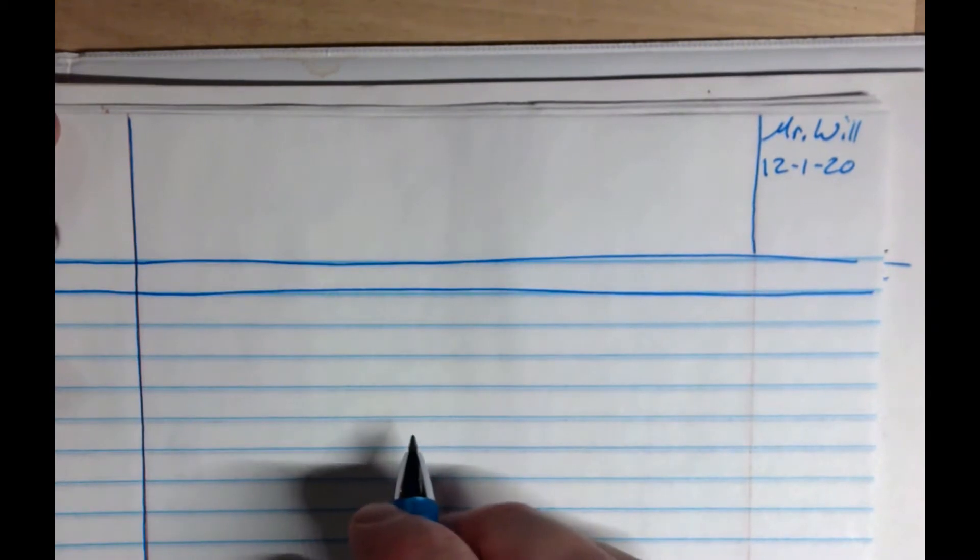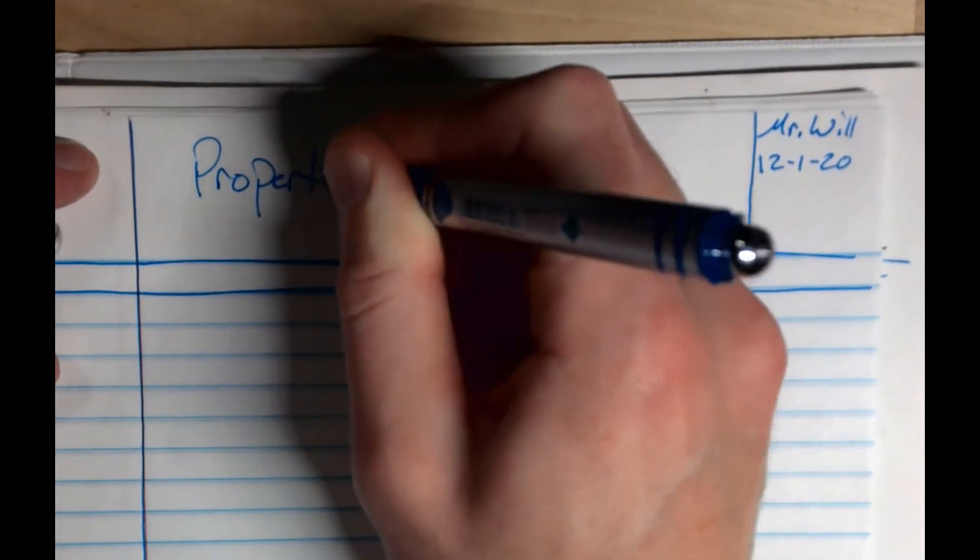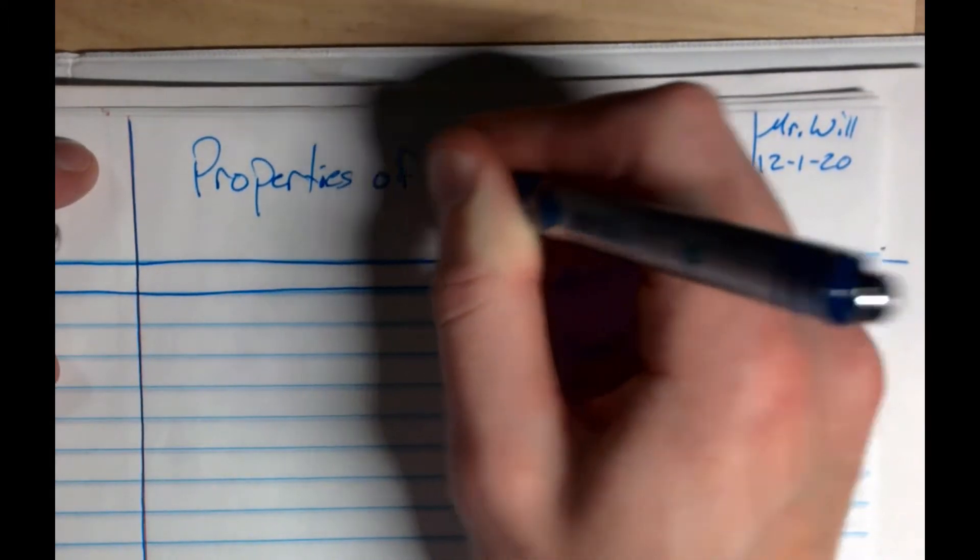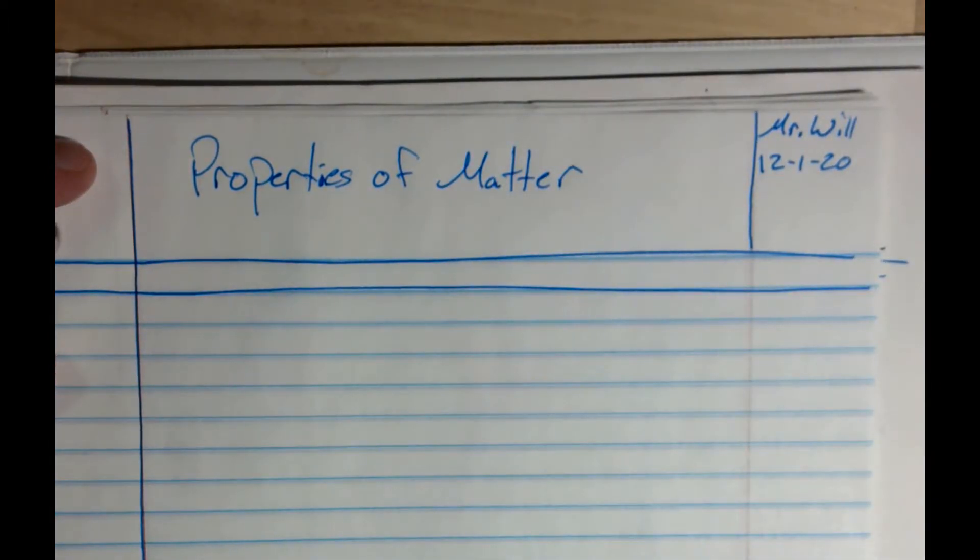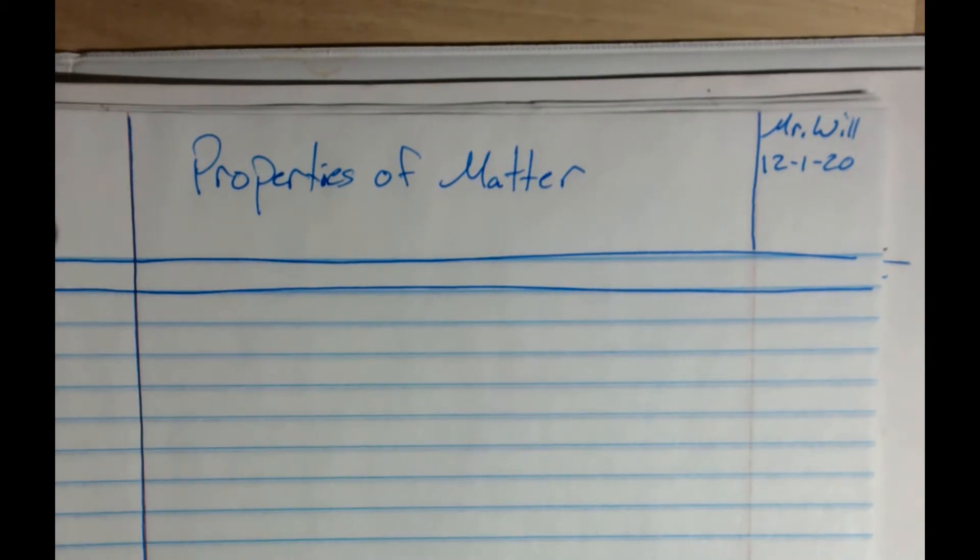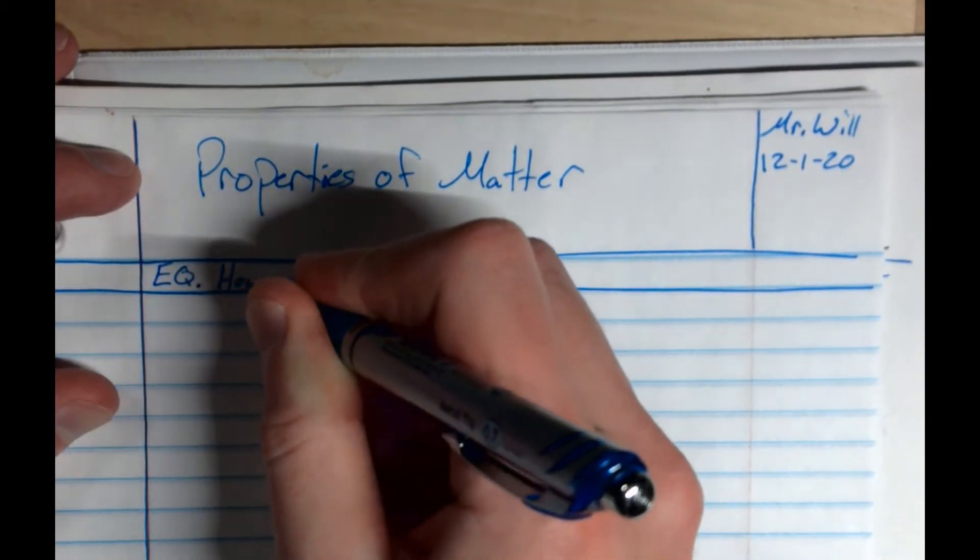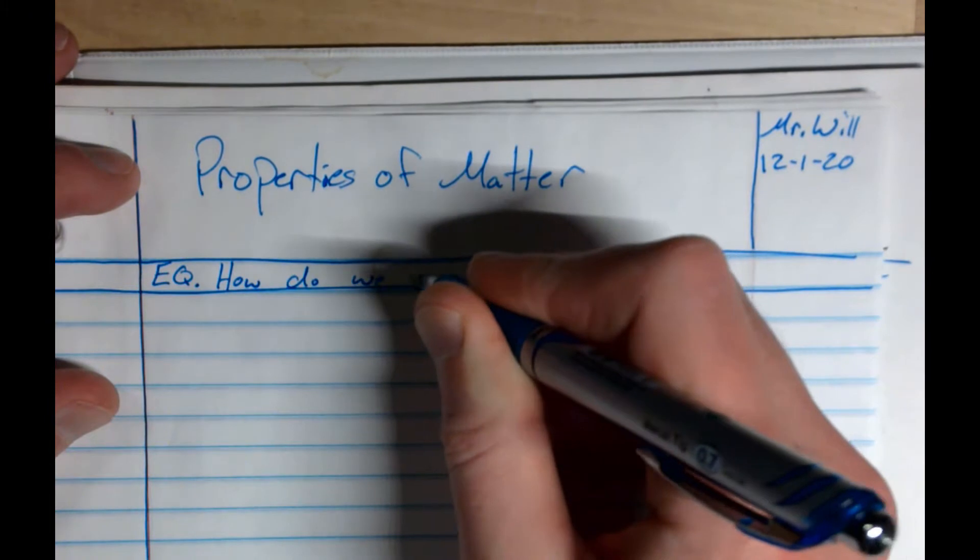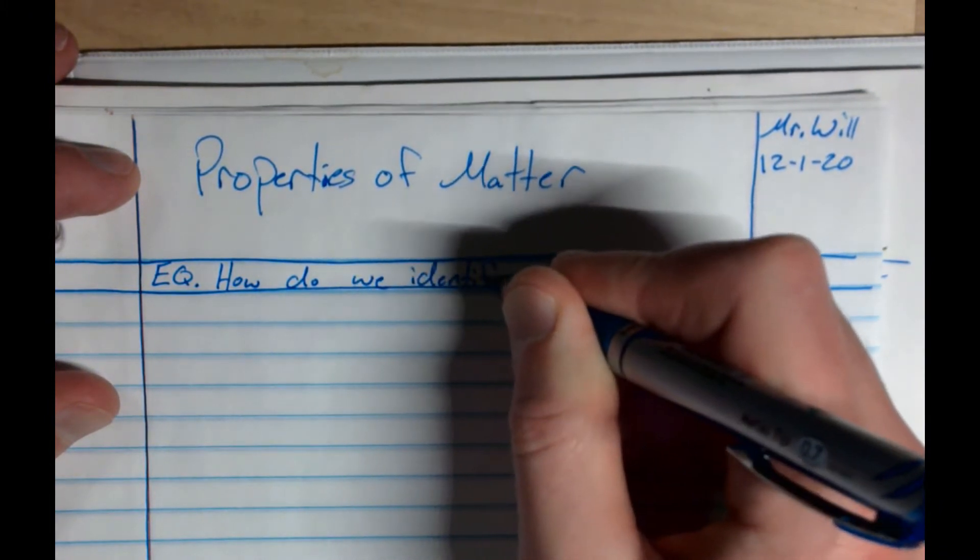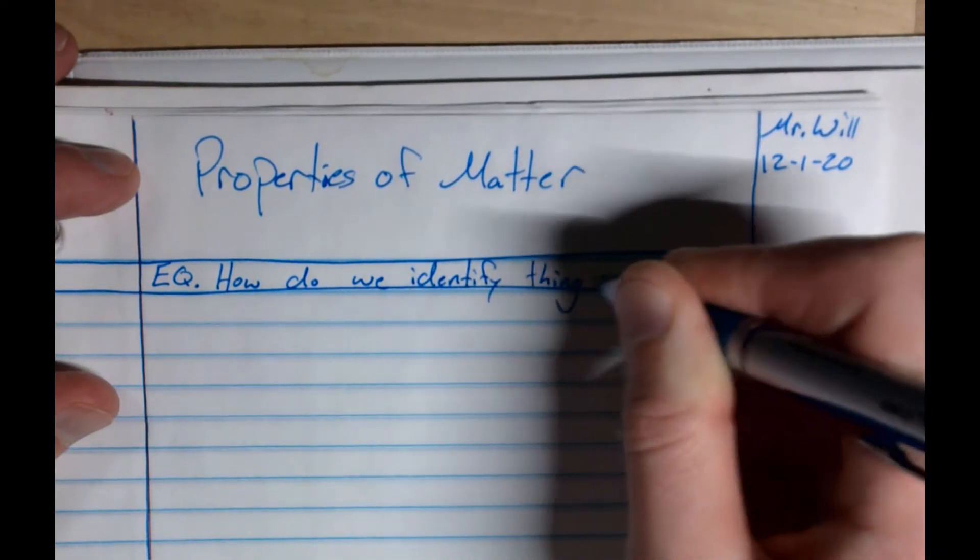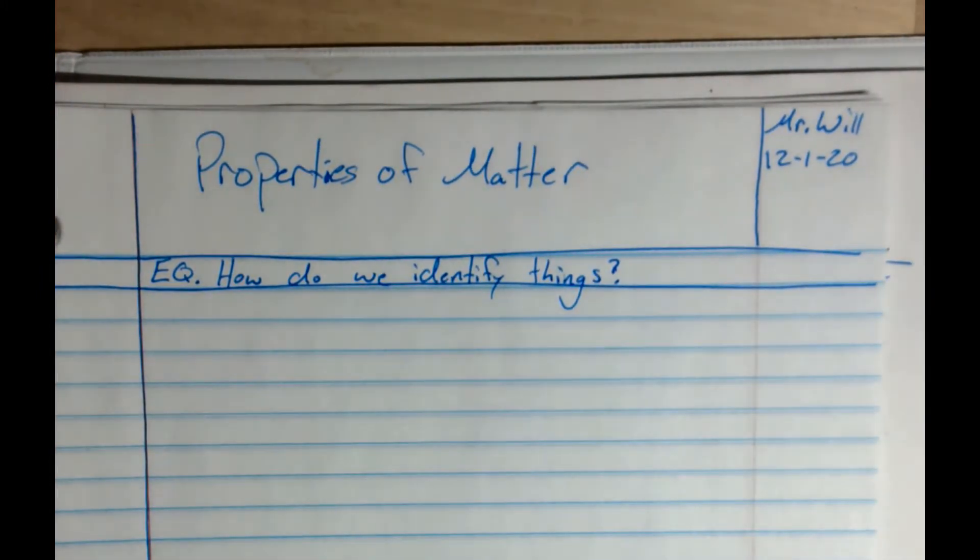We need to have a title. We're going to title this Properties of Matter. In our essential question, our EQ, is how do we identify things? That's the question we're going to try and answer with our notes today.